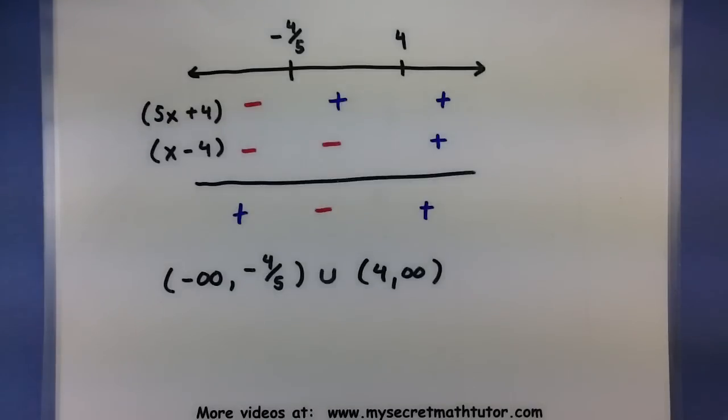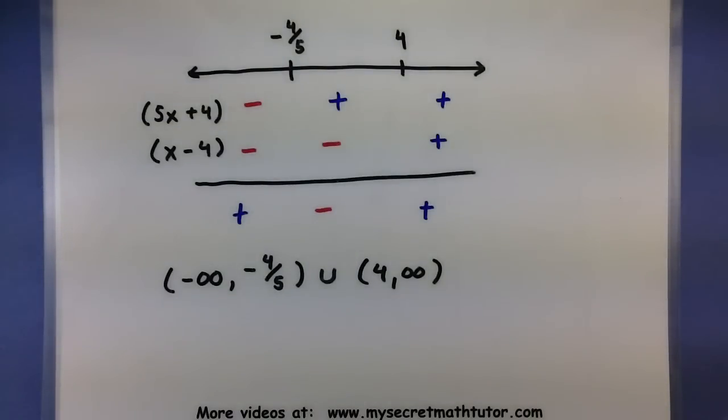Remember to make this sign table and keep track of all your signs so you can see what the overall quadratic sign will end up being.